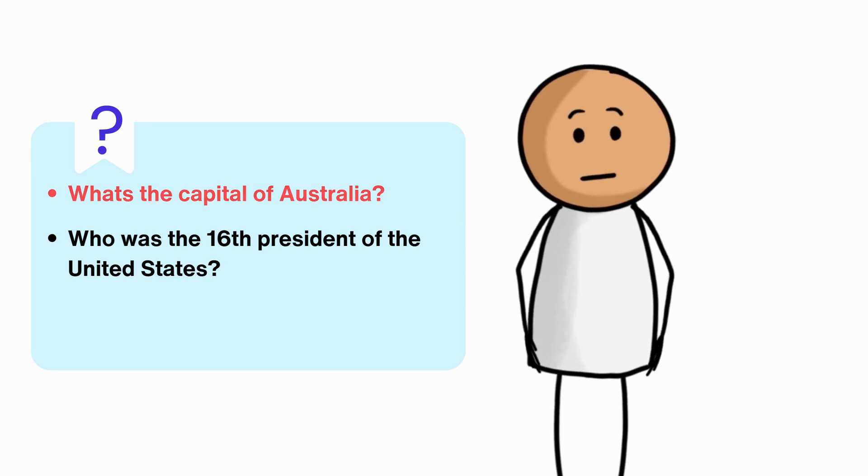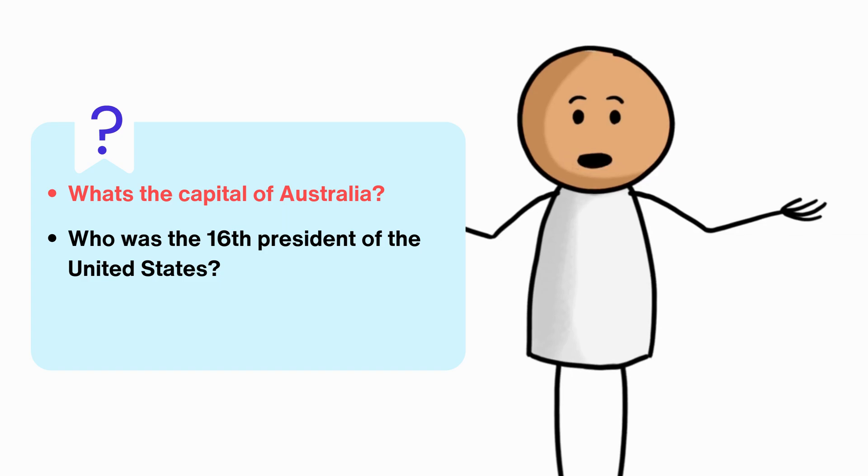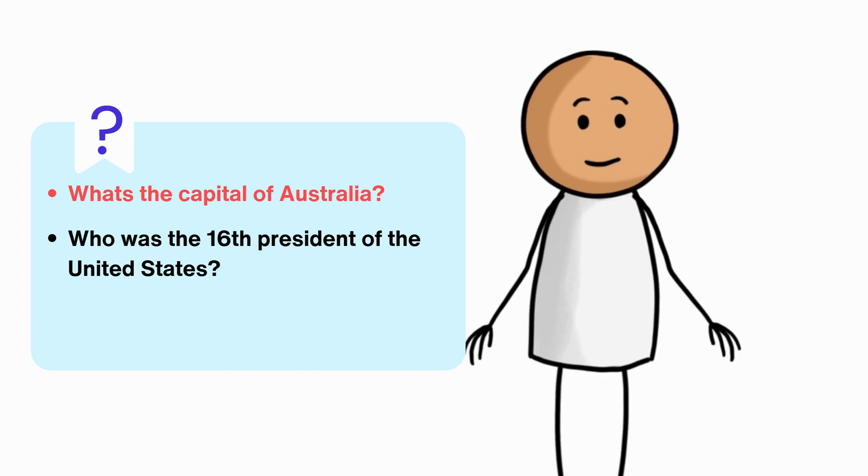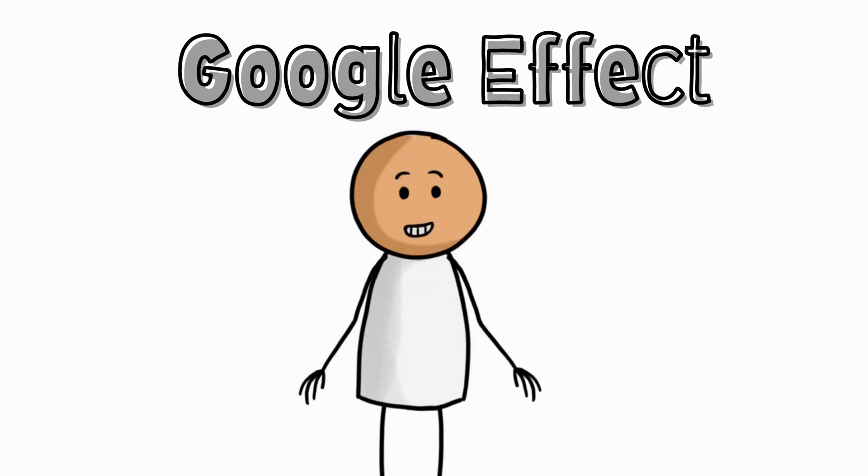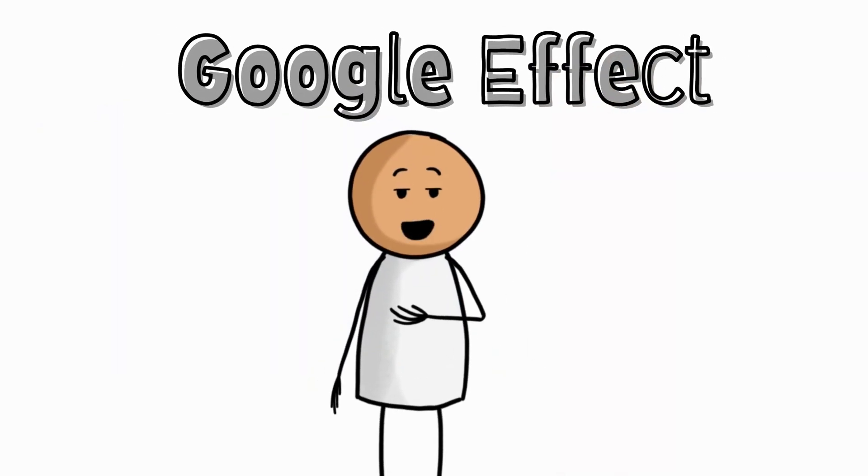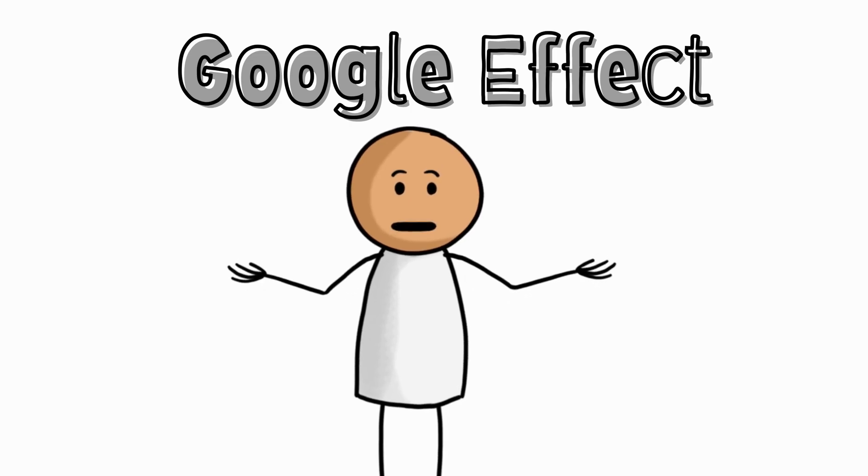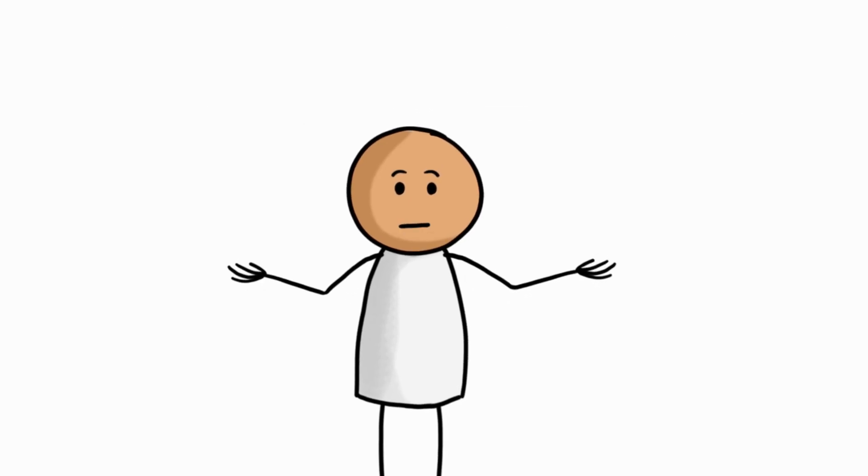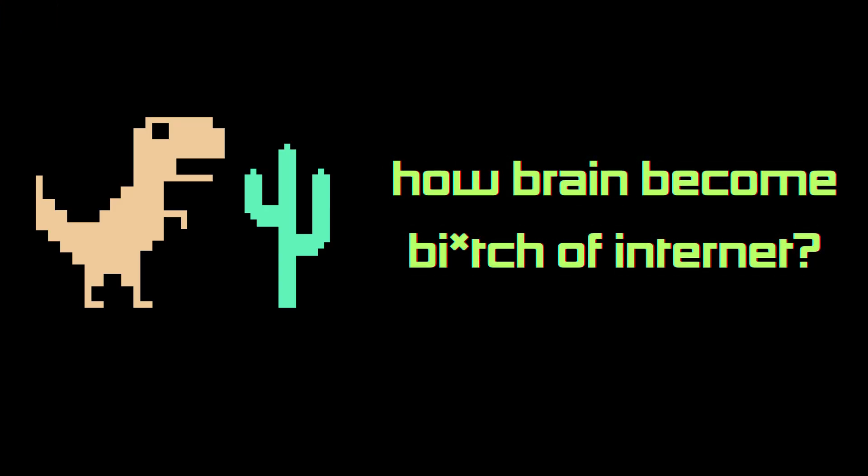See what happened there? Your brain's already making decisions about which piece of information is worth remembering and which you're willing to just look up. That's what we call the Google effect, and it's not just a trivia game. It's changing how our brains work, and it's happening to you every single day. Let's dig into why the internet is quietly rewriting your memory and what that could mean for the future of human thinking.